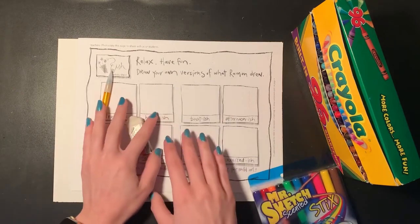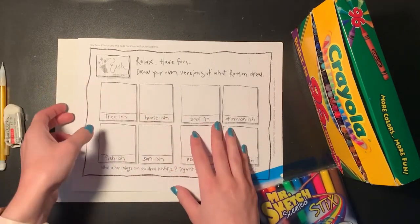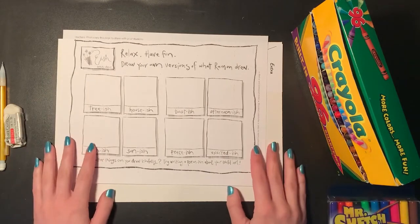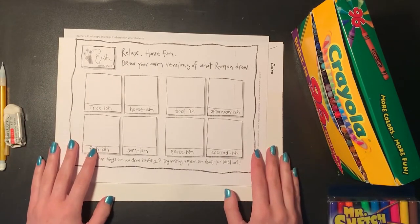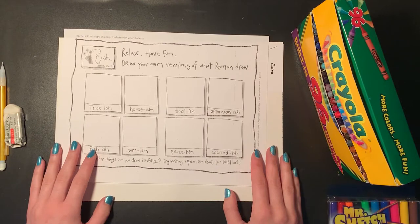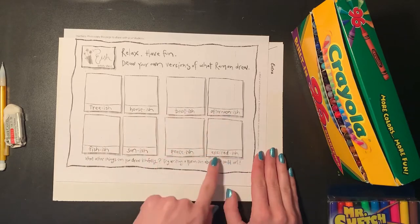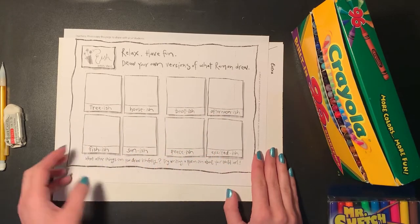We're also going to be using the page on my canvas page that is our ish sketch ideas page. This has all the different things that Ramon drew in Peter H Reynolds story ish as a way for us to practice drawing ishly. So we have trees, house, boat, afternoon, excited, peace, sun, and fish.